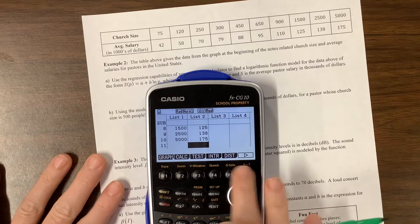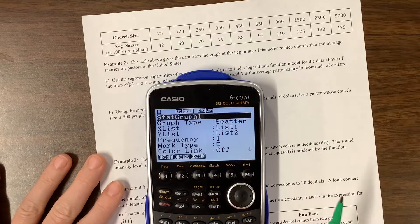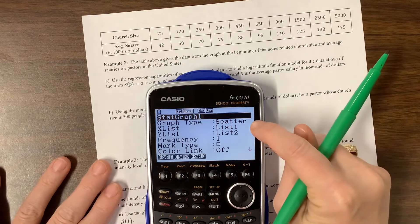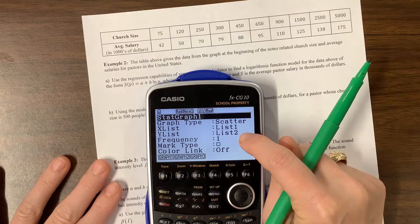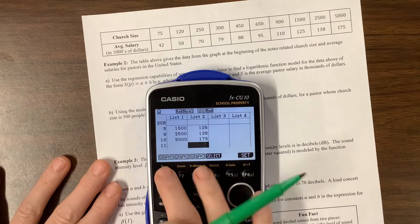And so now I can come over here. When I go to graph, it's not a bad idea to check to see how I'm going to set it. I want it to scatter plot. I want to use list one and list two. So now I can graph. Oh, well, there we go. Graph.